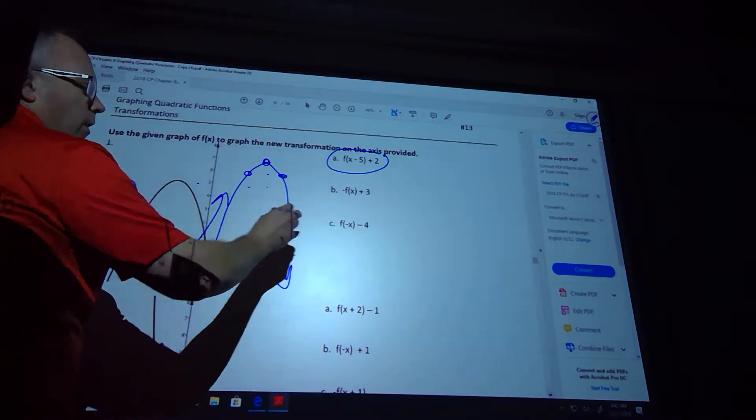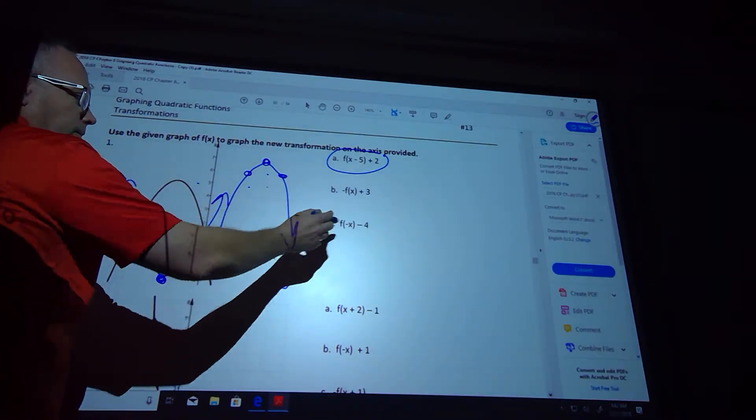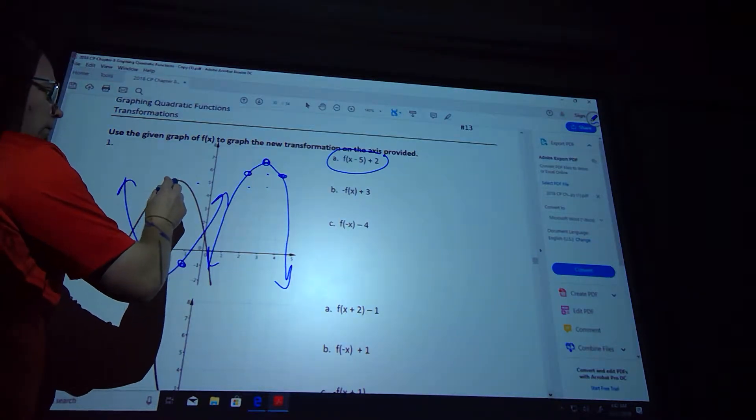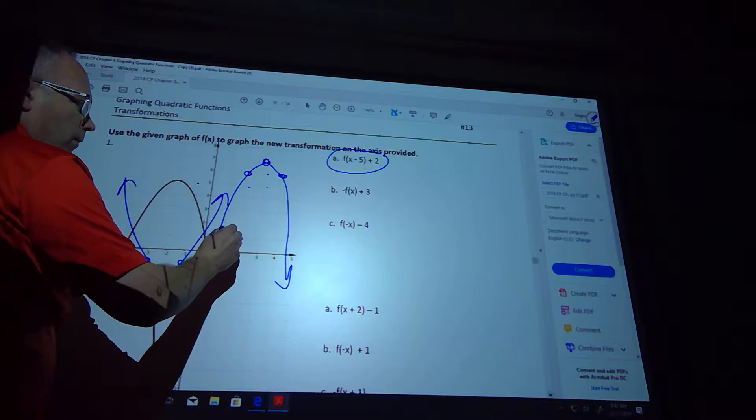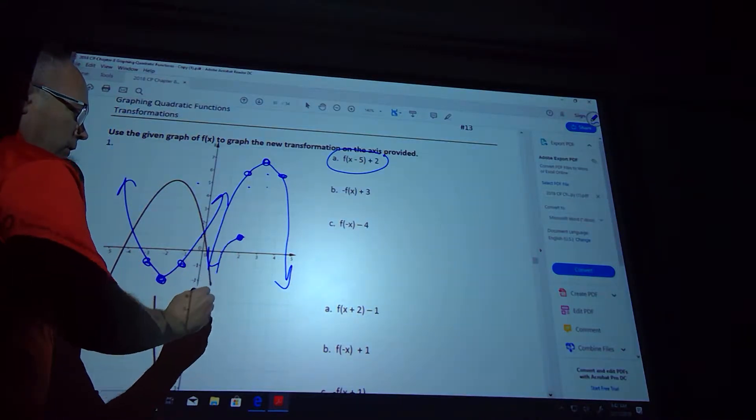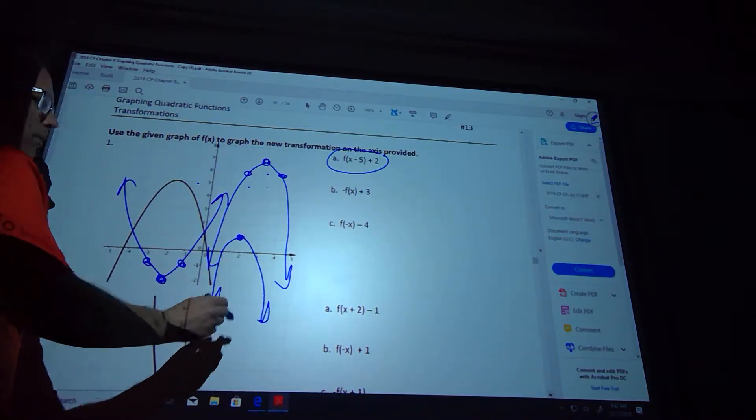This one is going to flip it over the y-axis, and it's going to move it down 4. So this is at negative 2. It comes here, and I'm going to go down 1, 2, 3, 4. And then it's going to open downward because the original opened downward.